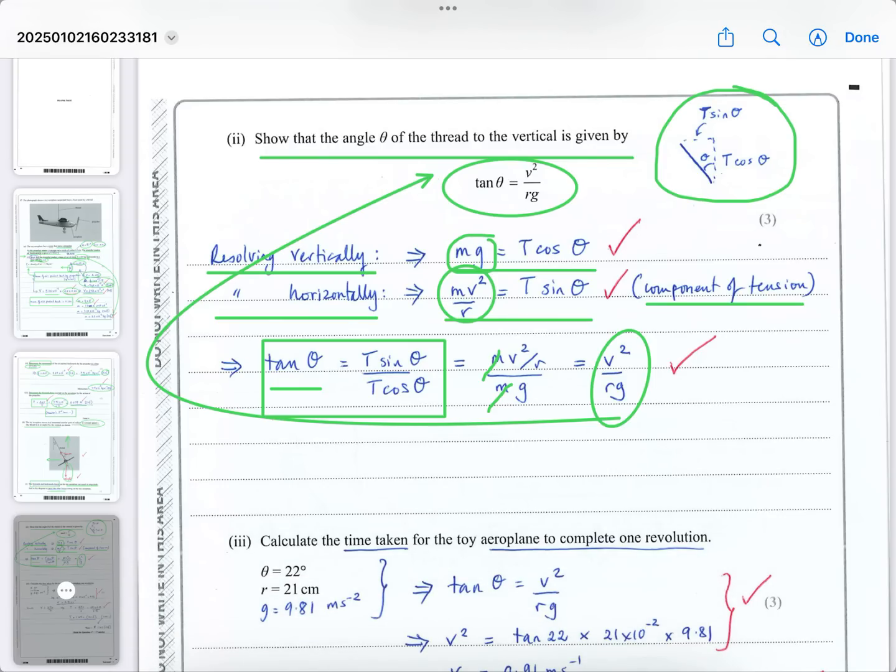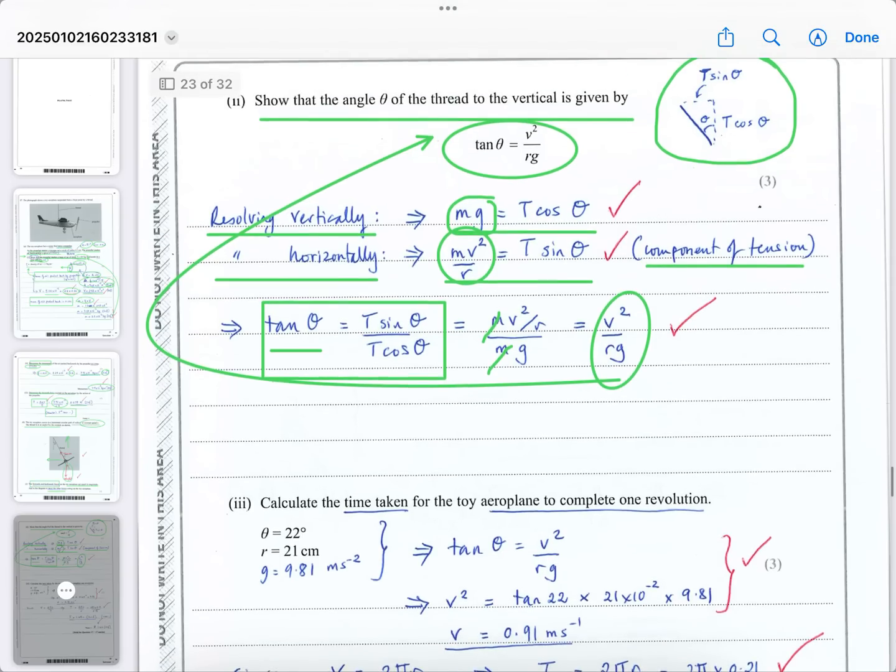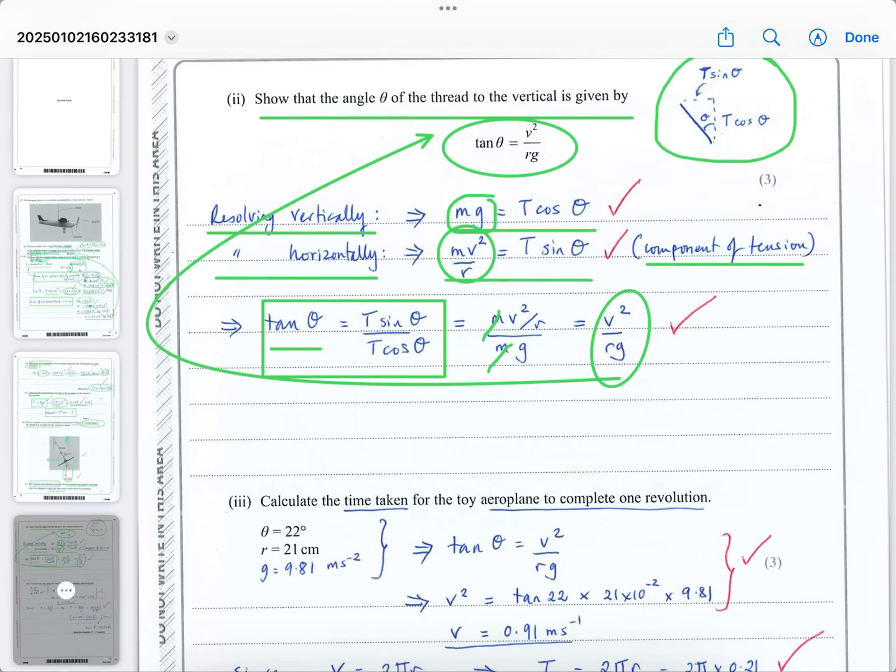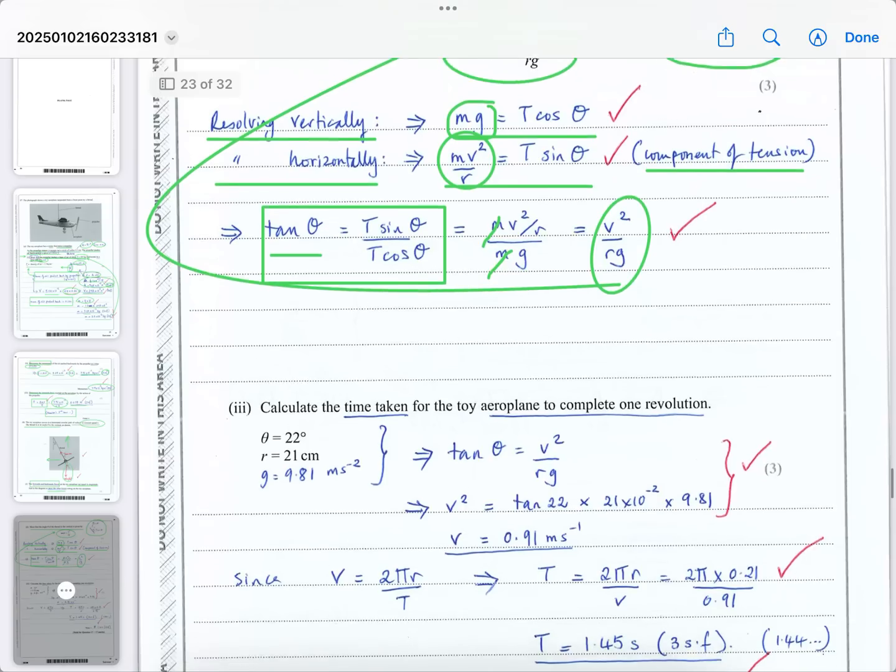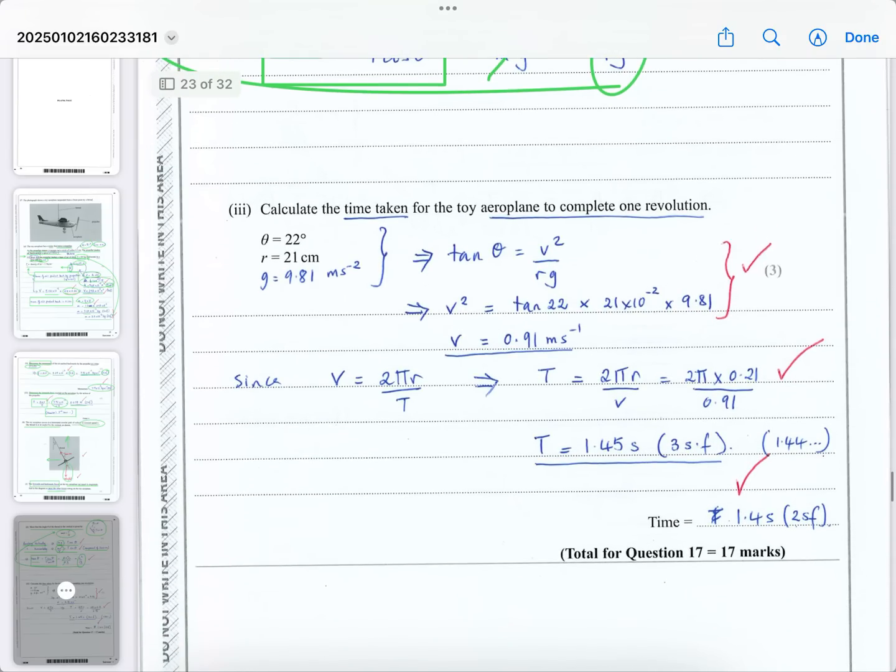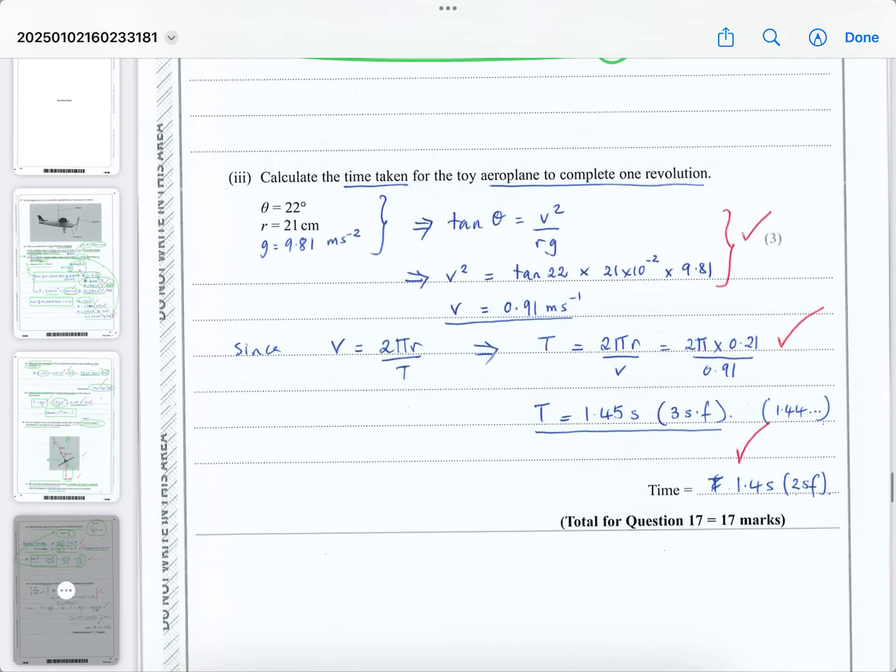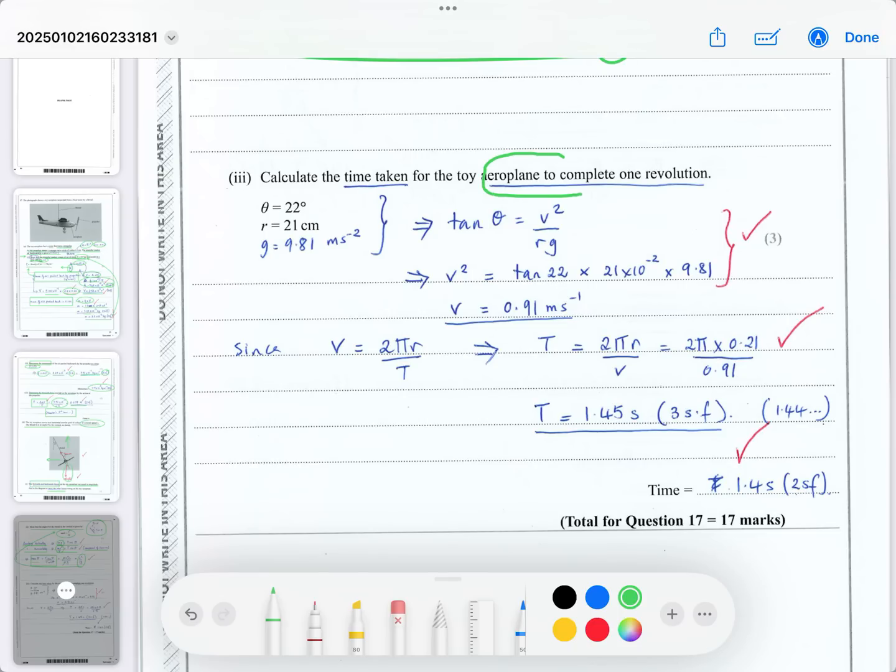This equation tan θ = v²/rg is always true for such questions. It's simply a matter of resolving tension components horizontally and vertically, then dividing one by the other. Remember, sin/cos always equals tan.